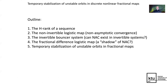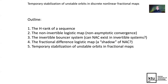This is the outline of my talk. I will introduce H-Ranks and demonstrate their applicability for non-invertible maps. As a typical example, I use the Logistic Map and will show non-asymptotic convergence. Then I will switch to invertible systems — a typical example being the invertible bouncer system — and discuss the existence of non-asymptotic convergence in invertible systems. Then I will discuss the fractional difference logistic map as a typical example of fractional maps, and finally talk about temporary stabilization of unstable orbits in fractional maps.